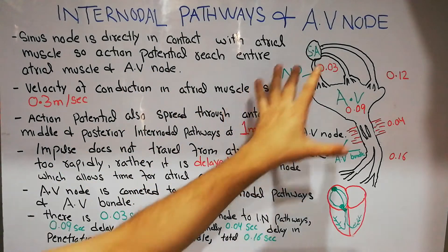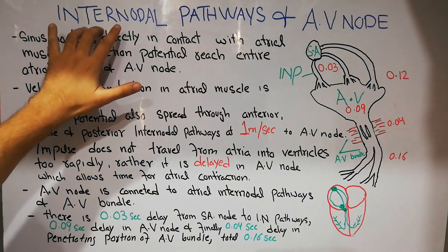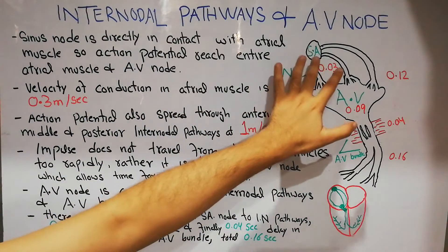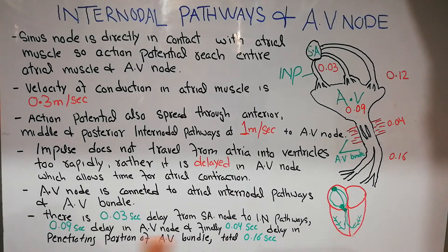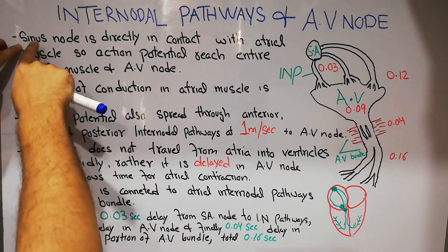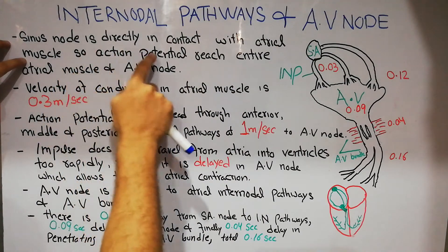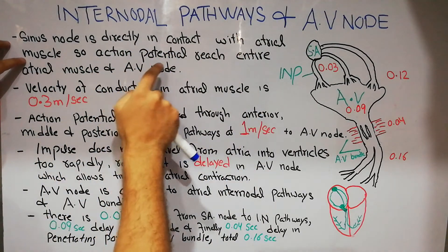Today we are going to discuss how the electrical impulse — for the contraction of the atria and the ventricle — gets transferred to the rest of the heart after being generated from the SA node. When the impulse is generated in the SA node rhythmically, the sinus node is directly in contact with the atrial muscle, so the action potential reaches the entire atrial muscle and the AV node.